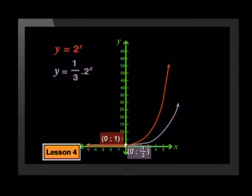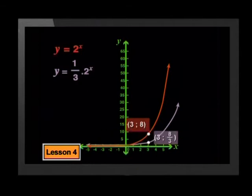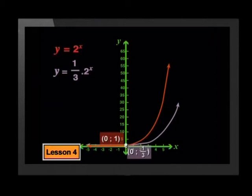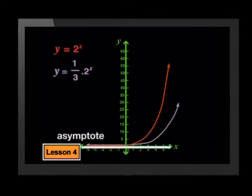At the point where x equals 0, the y-coordinate is 1 for the parent graph but one third for the new graph. At x equal to 3, the y-value on the parent graph is 8, but on the new graph the y-value is 8 divided by 3. So the y-values are one third as large on the new graph — they have decreased by a factor of one third, causing the parent graph to shrink vertically toward the x-axis. The y-intercept is the same as the a-value in the formula, and the asymptote is still at y equal to 0.